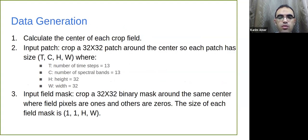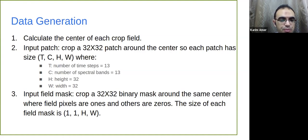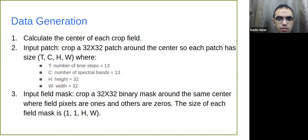The first step was to generate small patches. I calculated the center pixel of each crop field and took a 32×32 crop around it, so the total patch size is T×C×H×W — where T is the number of time steps (13), C is the number of spectral bands (13), and height and width are both 32. I also cropped a field mask of size 1×H×W (32×32) around the same center — a binary mask identifying which pixels actually belong to the field.